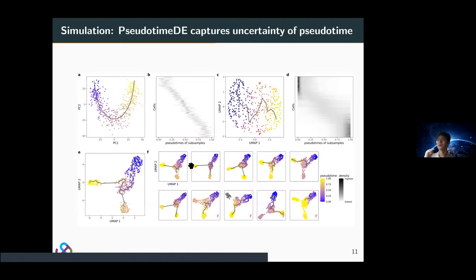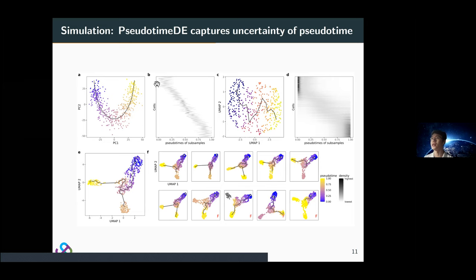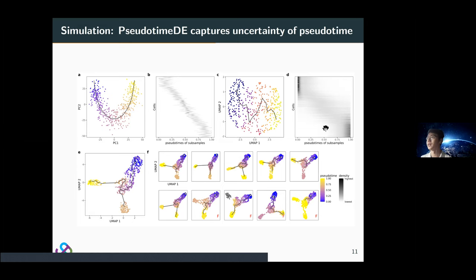Here we show how sctime-DE captures uncertainty of the pseudotime using simulation data. Figures A and C are two visualizations of the fitted pseudotime by Slingshot and Monocle 3. Figure B represents the distribution of the pseudotime from the subsampling procedure, where each line represents one individual cell. We lay out the distribution of the inferred pseudotime along zero to one, and we can see a clear spreadness, meaning pseudotime is uncertain across different subsamples. Comparing A and C, Monocle 3 uses the UMAP algorithm which is more random, and the curve is much weaker, so pseudotime uncertainty is naturally higher.